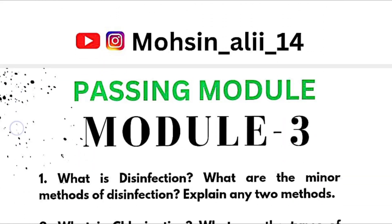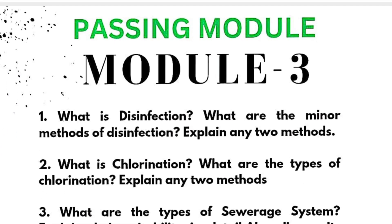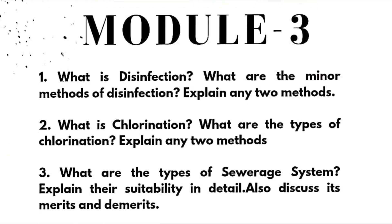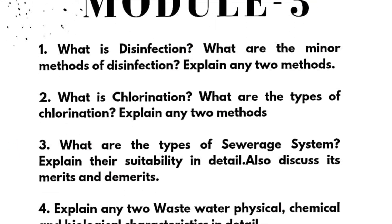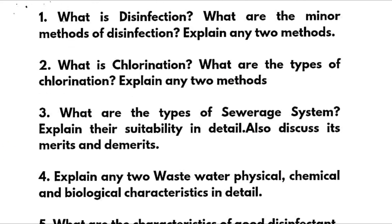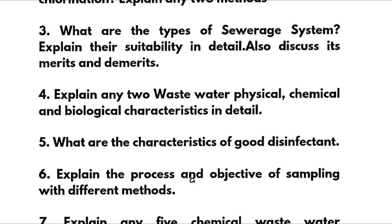Coming to Module 3, which is again a passing module, you have to go through: what is disinfection? What are the minor methods of disinfection? Explain any two methods. What is chlorination — again super important — what are the types of chlorination? Explain any two methods. What are the types of sewage systems? Explain their suitability in detail and also discuss merits and demerits.